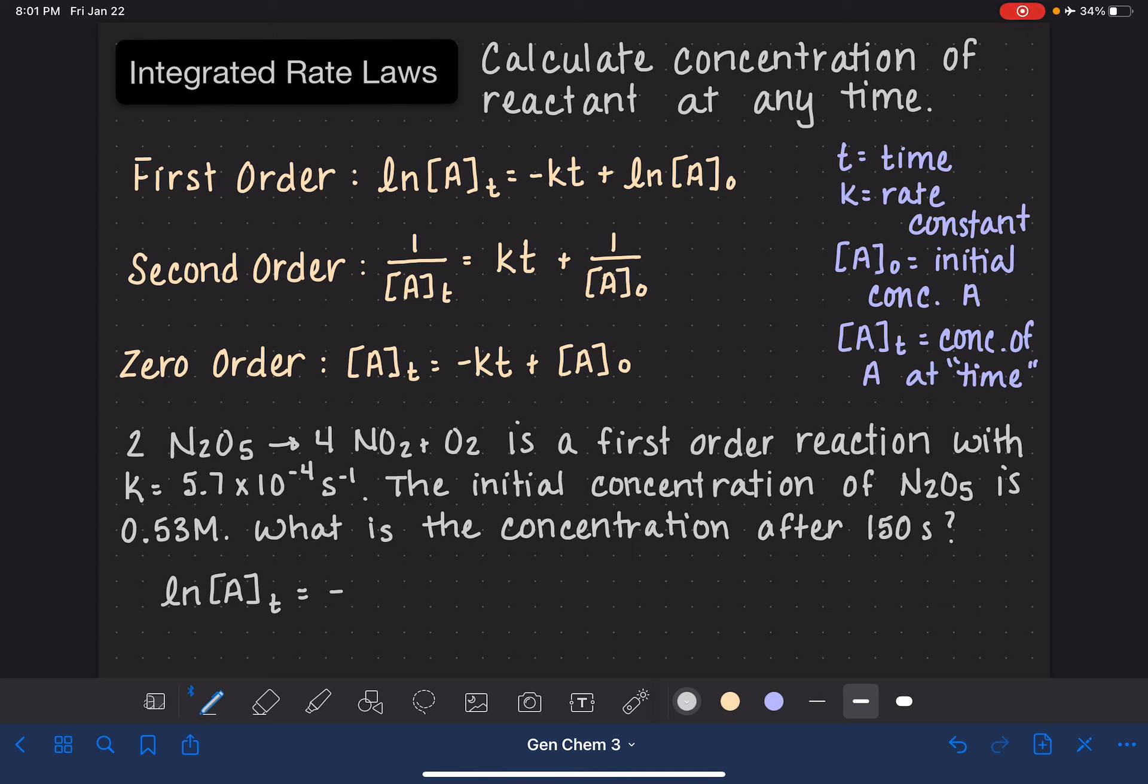And that is equal to, because it's a first order reaction, negative rate constant, 5.7 times 10 to the minus 4 inverse seconds, or 1 over seconds. The next term is the time. You do want to make sure that your time units are consistent with the units of the rate constant. In this case they're both units of seconds, plus the natural log of the concentration of A at the beginning of the reaction, which is 0.53 molar.